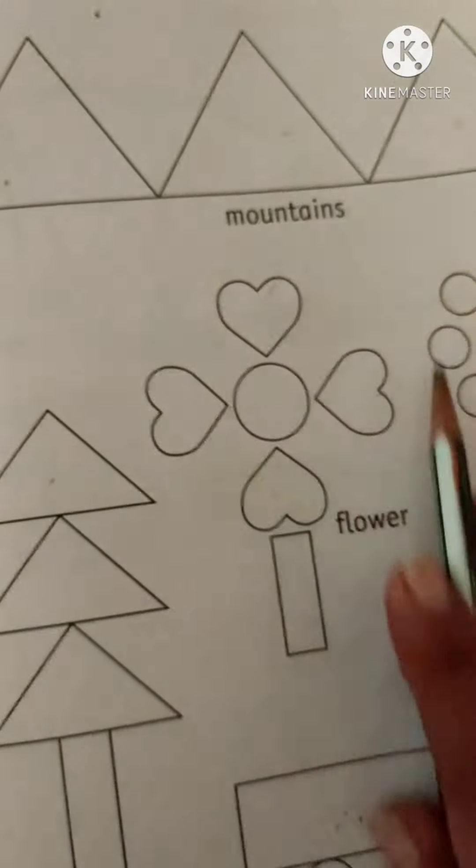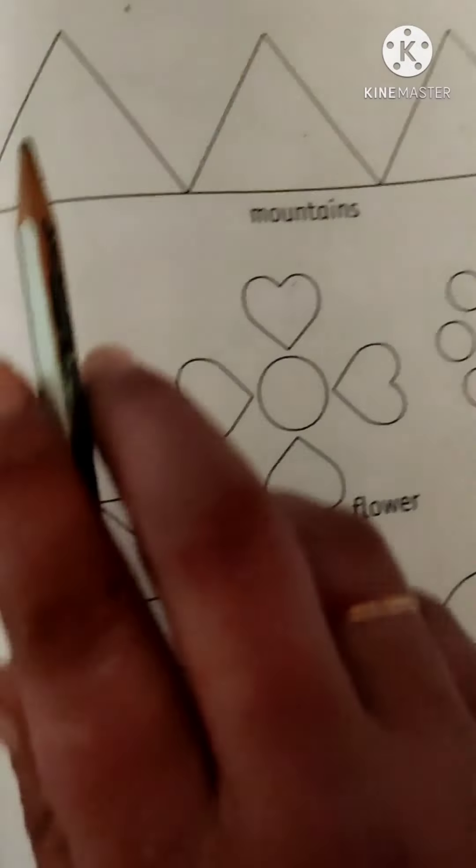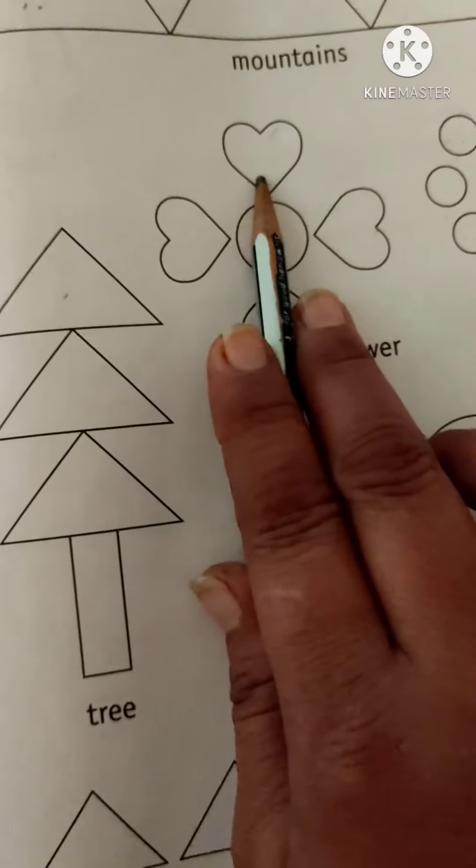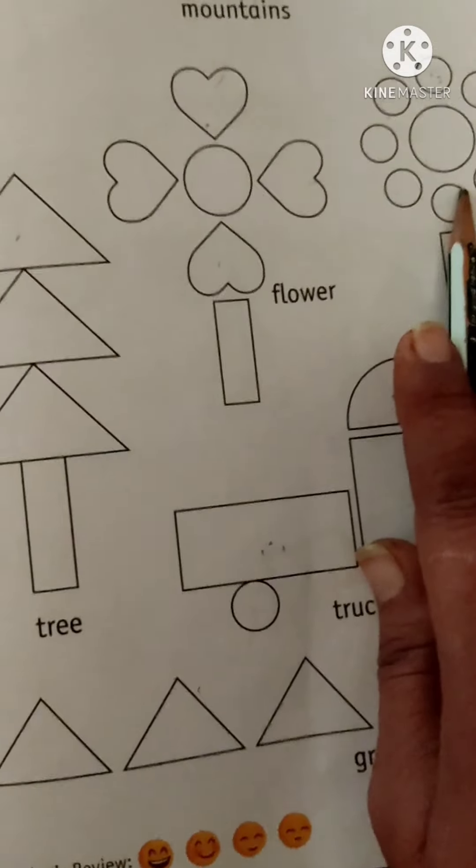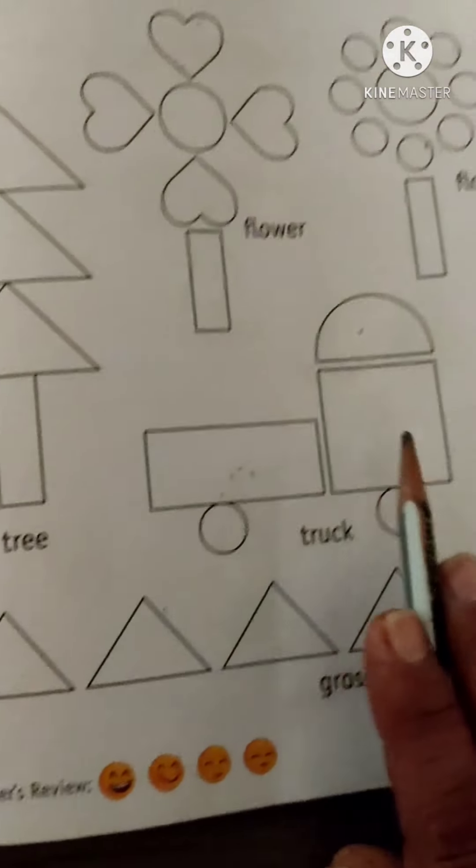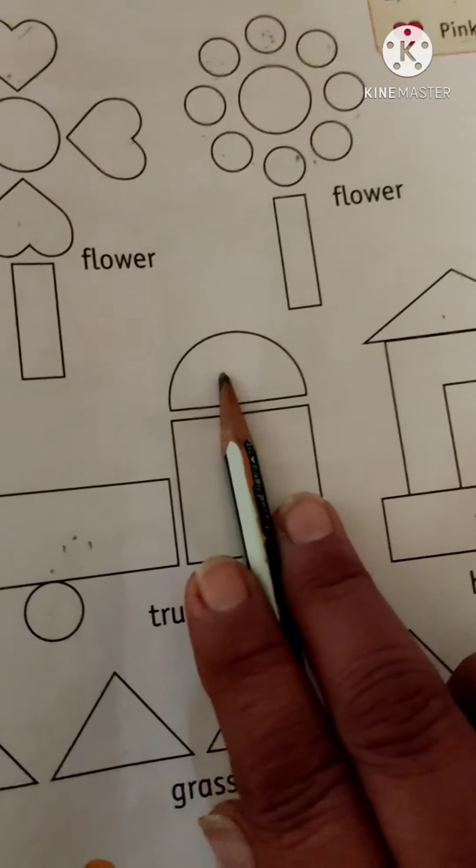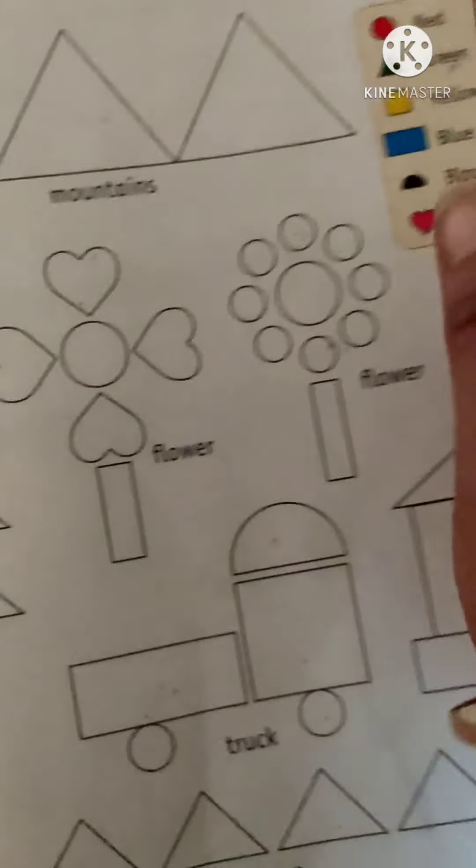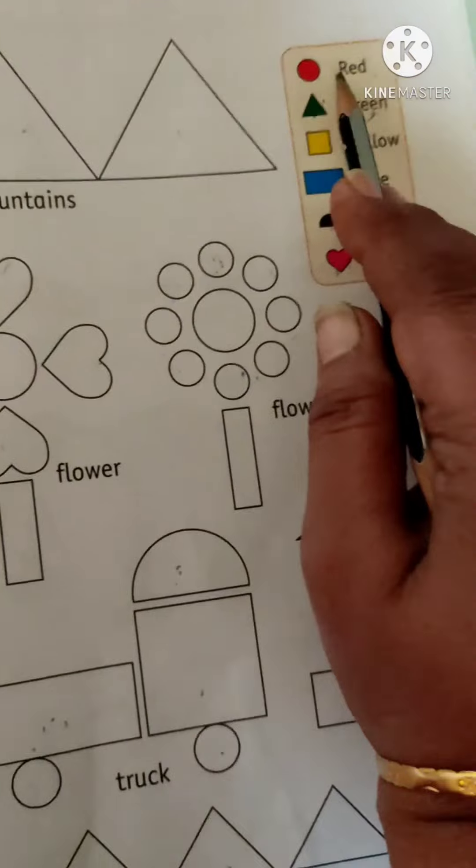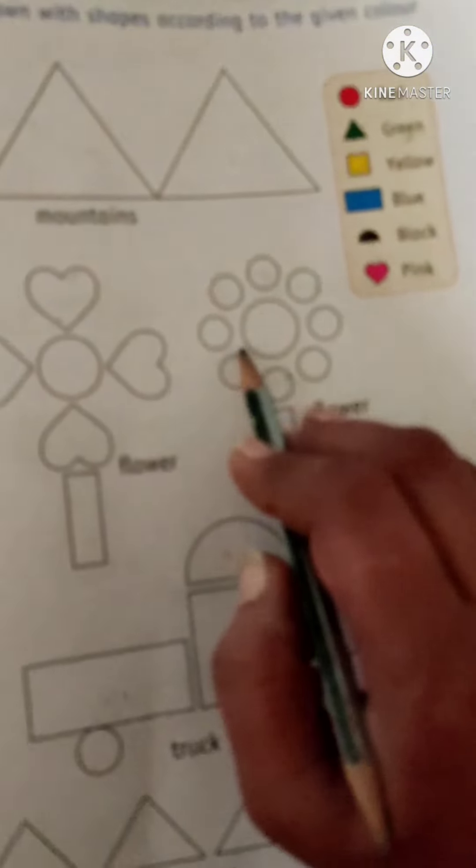See kids, we have many shapes in this page. Triangle, heart shape, circles, rectangle, square, half circle. Right? And we have color keys for the colors.